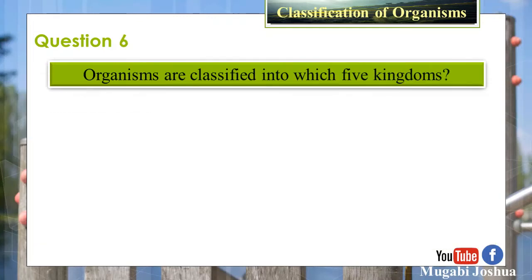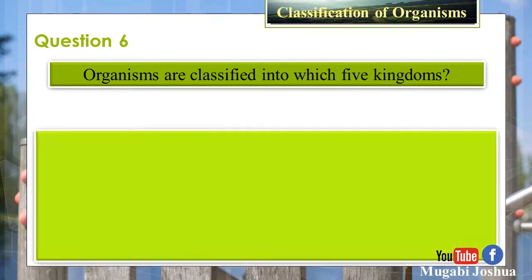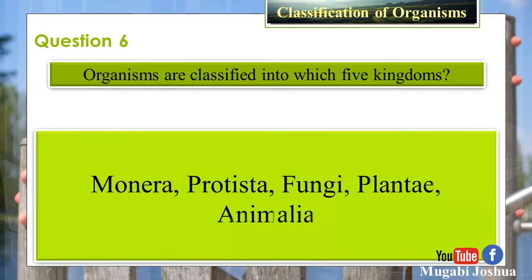Question 6: Organisms are classified into which five kingdoms? Answer: Monera, Protista, Fungi, Plantae, and Animalia.